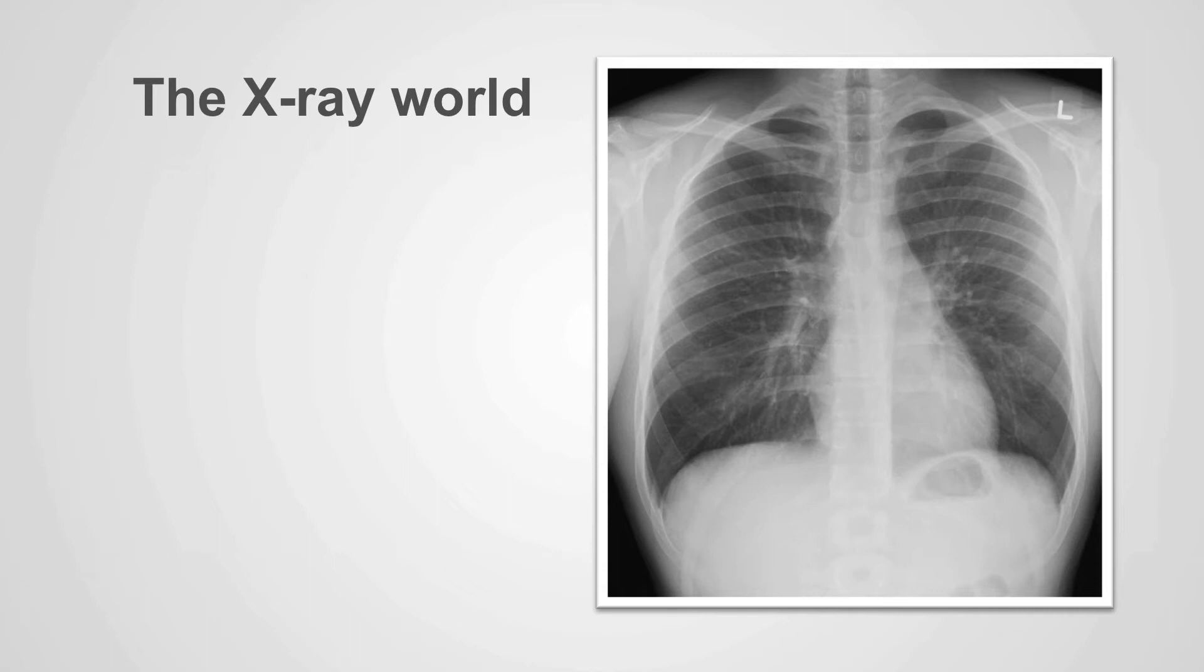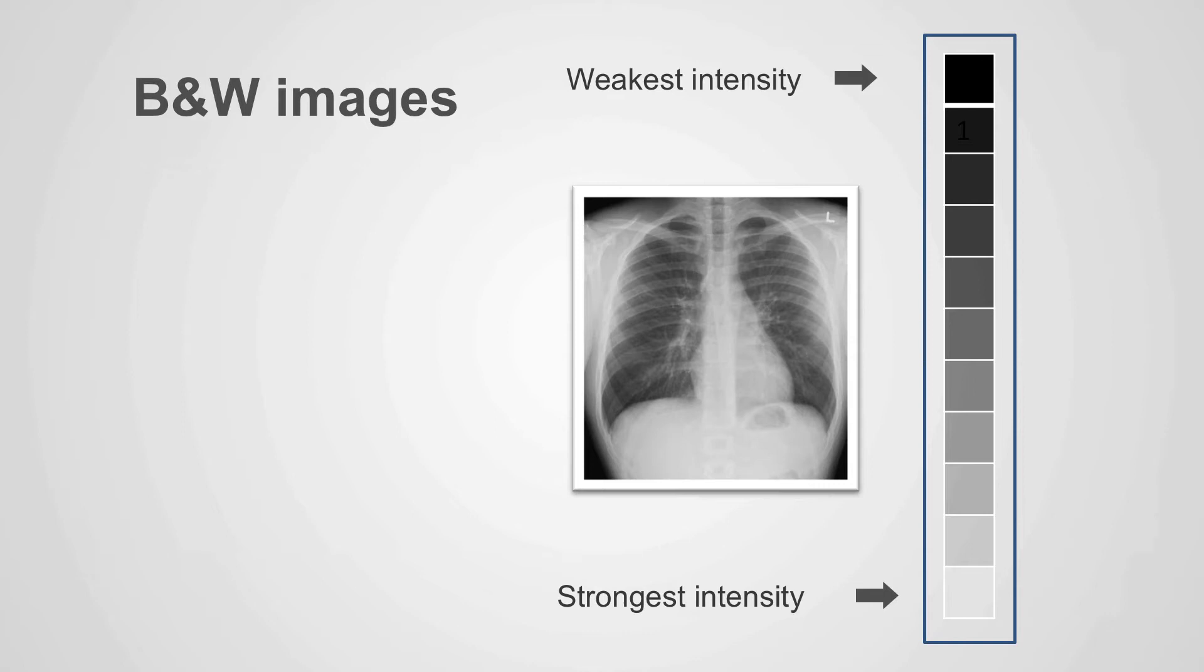On a grayscale image, each pixel carries only intensity information. Images of this sort are called black and white and are composed exclusively of shades of gray, varying from black as the weakest intensity to white as the strongest.